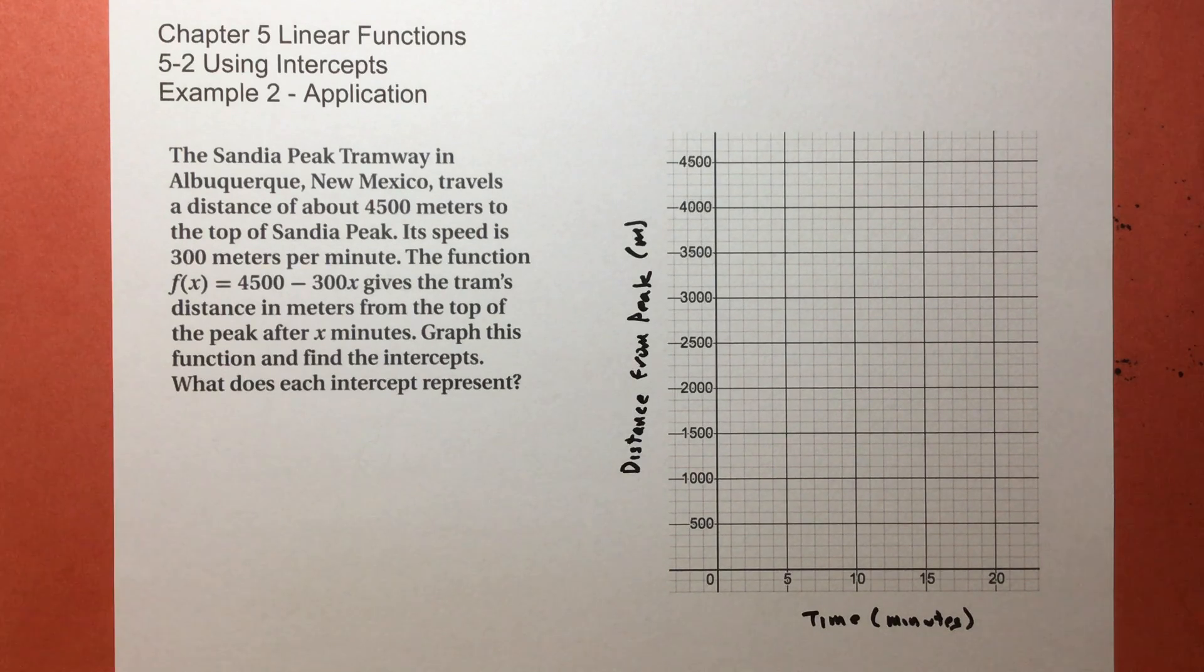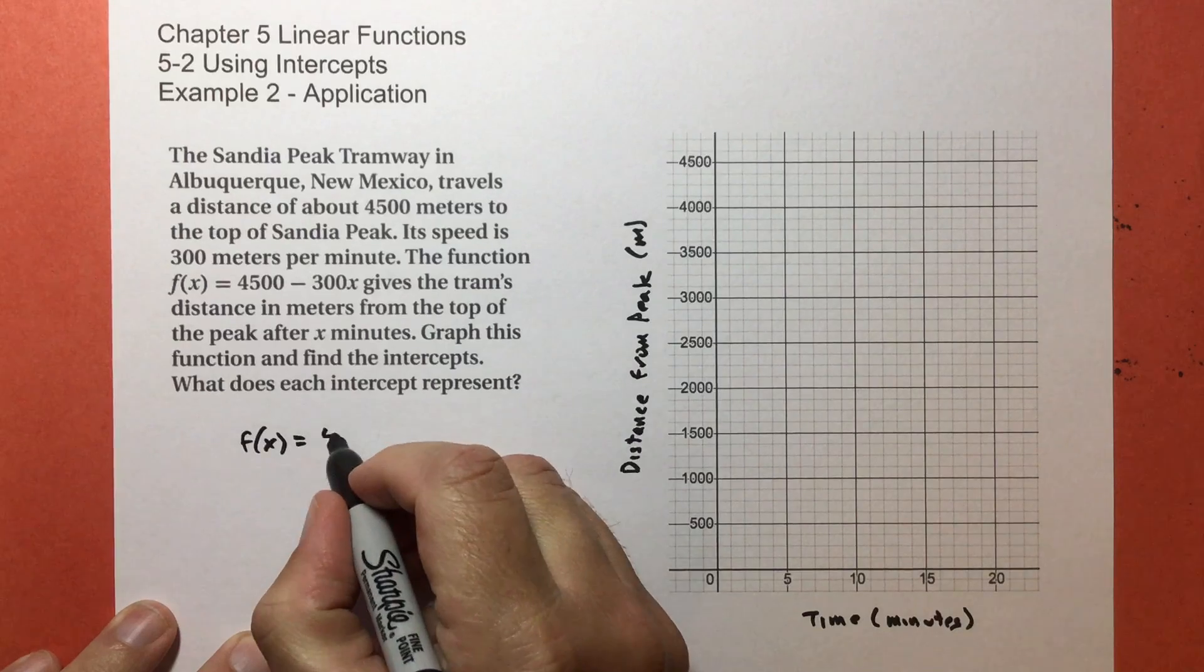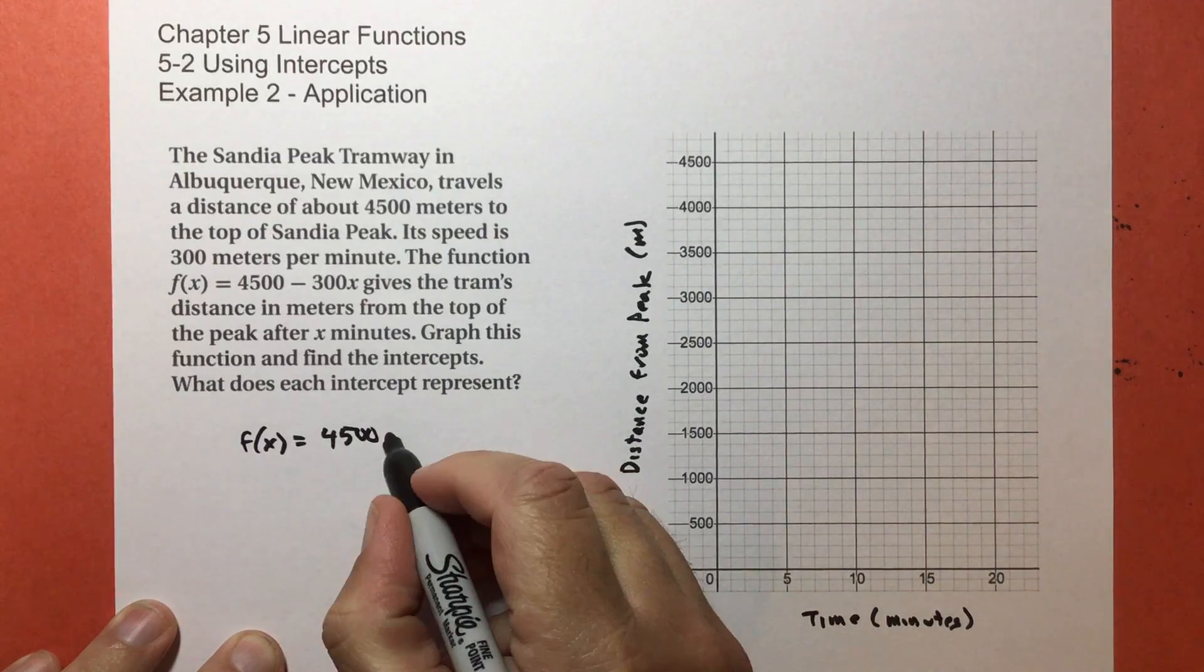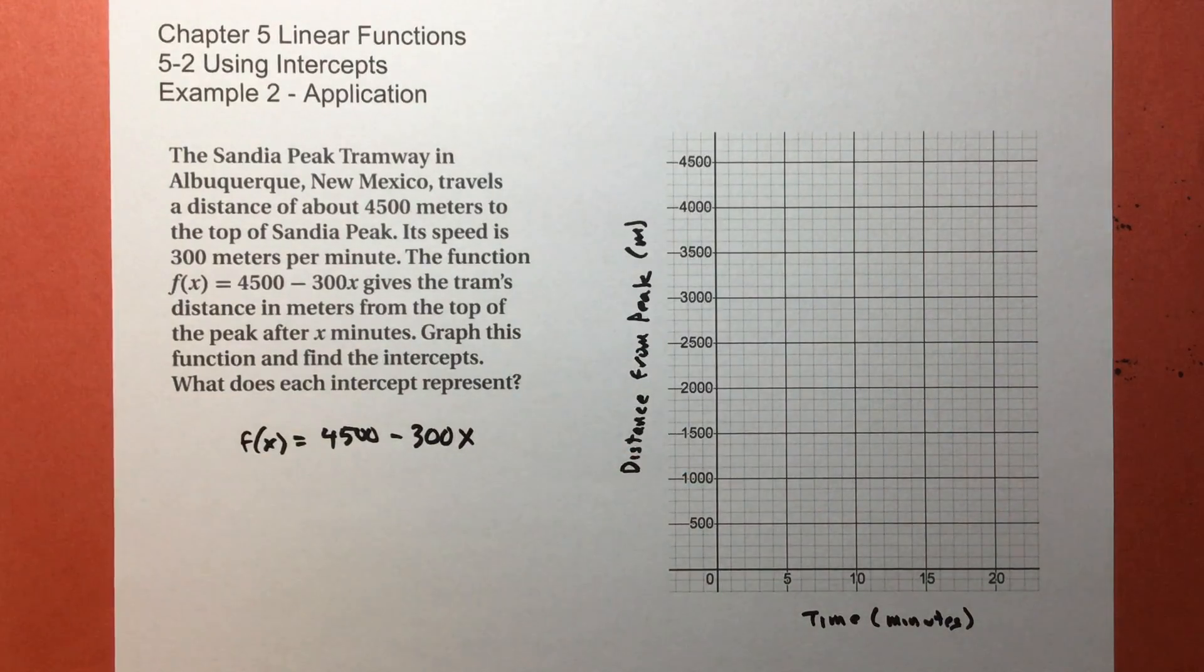Okay, its speed is 300 meters per minute. This function, f of x equals 4500 subtract 300x,